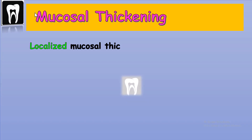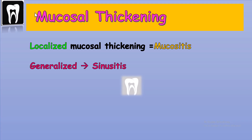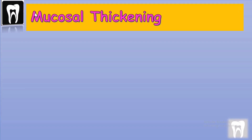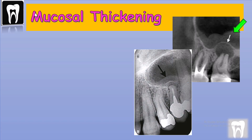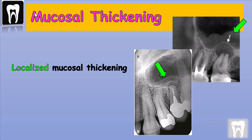If the mucosal thickening is localized, we call it mucositis. If it's generalized, it's mostly caused by sinusitis or sinus infection. Even a posterior maxillary tooth that is infected can cause a localized mucosal thickening — mucositis — right at the floor of the maxillary sinus. If the tooth is treated, the mucosal thickening starts to go away.